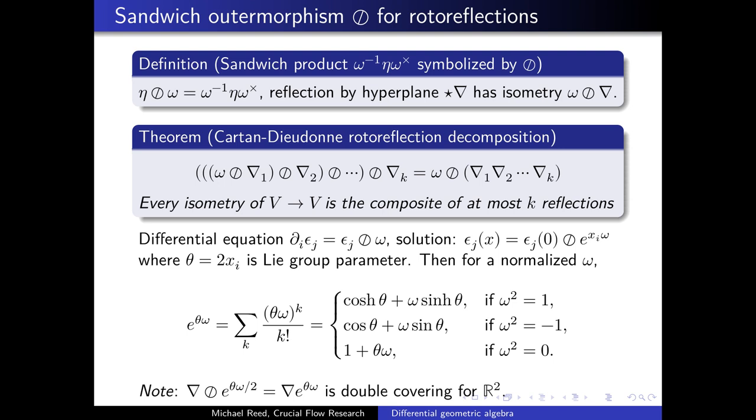In geometric algebra, we have a sandwiched automorphism here represented by the O slash symbol. This in a special case when we are sandwiching a vector is actually a reflection by a hyperplane. And this leads to the theorem of Cartan-Dieudonné of the rotoreflection decomposition. And it says that every isometry is the composite of at most k reflections, which can be observed in terms of the sandwich automorphism. Let's consider the differential equation of the sandwich automorphism with the solution of the exponential function with the Lie group parameter. For the special case of a normalized omega, which squares to a scalar, we have written the explicit solution of the exponentials, which is a double covering in the plane.